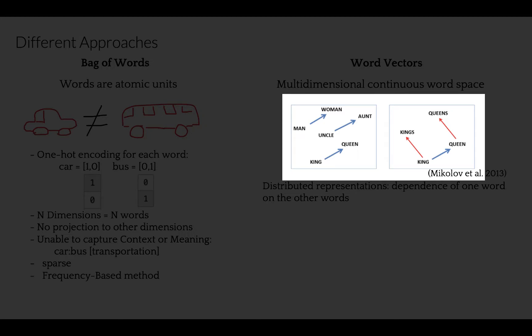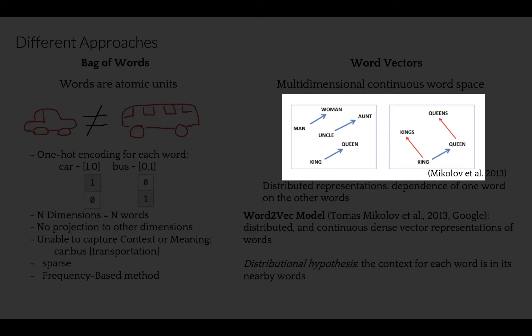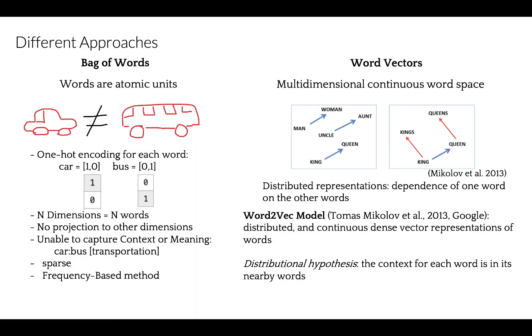Look at the left panel — it shows word vectors for three word pairs illustrating the gender relation. The right panel shows how multiple relations can be embedded for a single word, including singular, plural, and gender relations. The vector space representation can capture syntactic — singular and plural — and semantic irregularities.